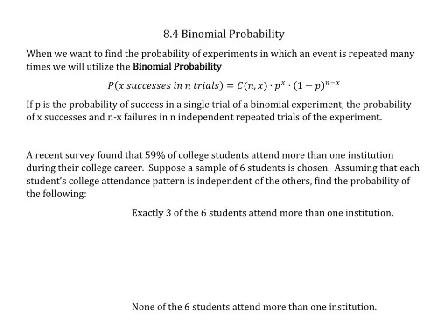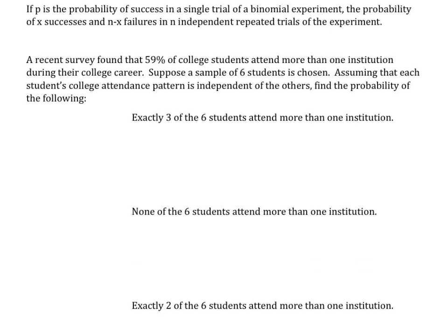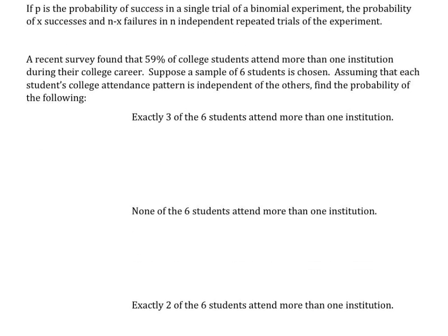So it looks something like this. A recent survey found that 59% of college students attended more than one institution during their college career. Suppose a sample of six students is chosen, assuming that each student's college attendance pattern is independent of the others. Find the probability that exactly three of the six students attend more than one institution.